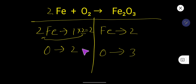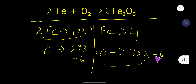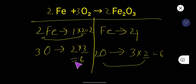Now let us try to balance oxygen. Here oxygen is 2, here it is 3. If I multiply O₂ by 3 that gives us 6, and if I multiply Fe₂O₃ by 2 that gives us 6. So place 3 before O₂ and 2 before Fe₂O₃. Now the number of oxygen is 6 on both sides — 3 times 2 equals 6.